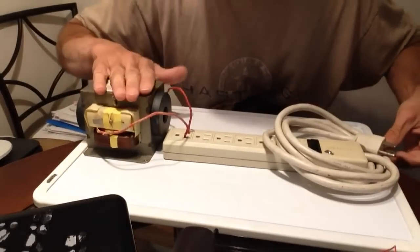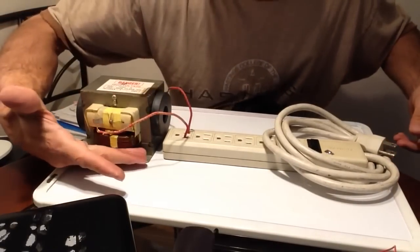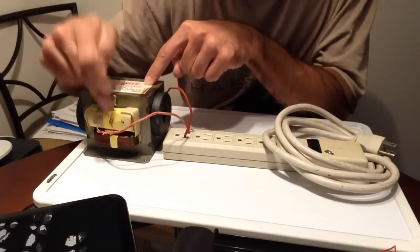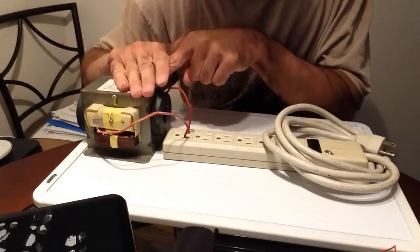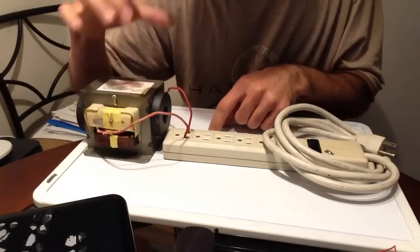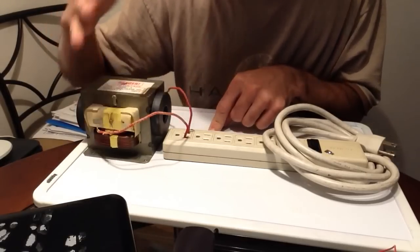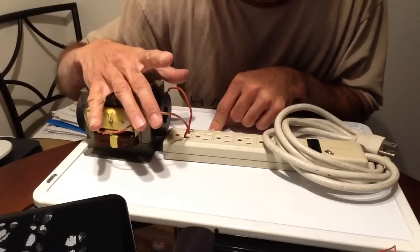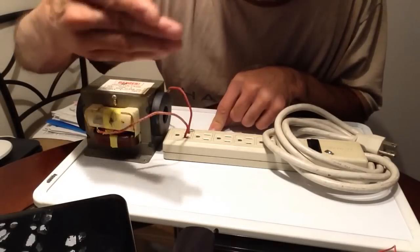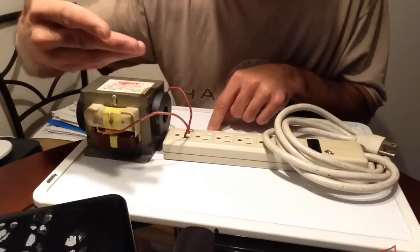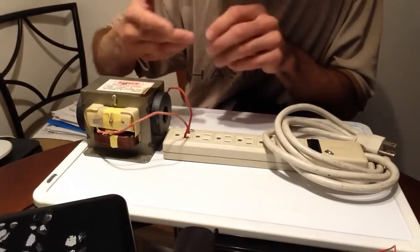A microwave transformer oven is made out of a primary coil, primary winding which is the 120, and the secondary coil which is 2000 volts. We don't need that. All we need is just an extra winding, an extra coil that comes already with the transformer. That one is going to supply energy for the filament of the magnetron. The magnetron is a device that creates the microwaves. That's all we need.